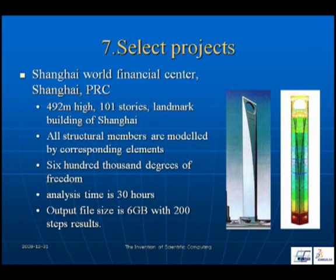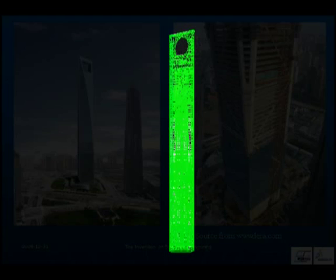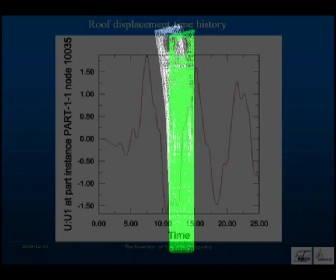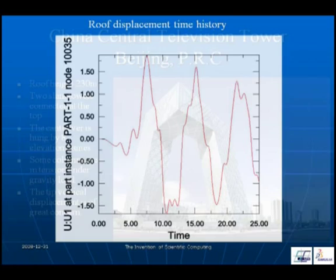The first selected project is the Shanghai World Financial Center, the tallest building in China at 492 meters high. All structural members are modeled by corresponding elements including the coupling beams and slabs. Six hundred thousand degrees of freedom are used and analysis time is 30 hours. The simulation shows the higher modes of the building are clearly visible, with a maximum roof displacement of 1.6 meters.